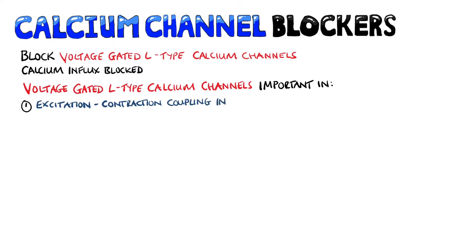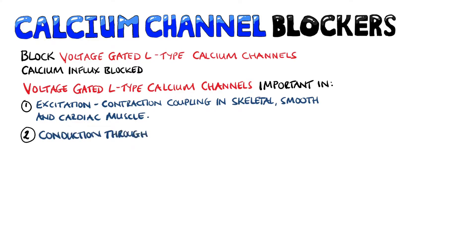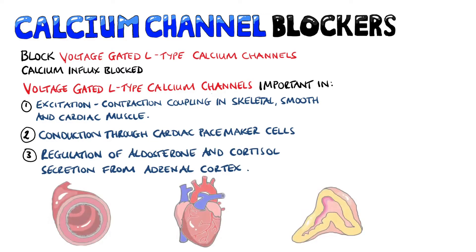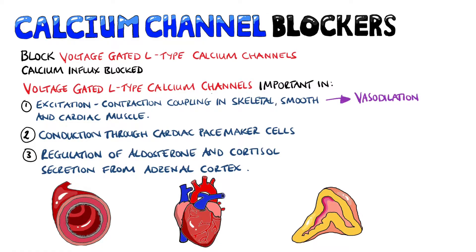Voltage-gated L-type calcium channels are needed for excitation-contraction coupling of skeletal, smooth, and cardiac muscles. They are also involved in the conduction of pacemaker cells and regulate aldosterone and cortisol secretion from the adrenal cortex. By acting on vascular smooth muscle, calcium channel blockers lead to vasodilation — importantly, they work on arteries, not veins.